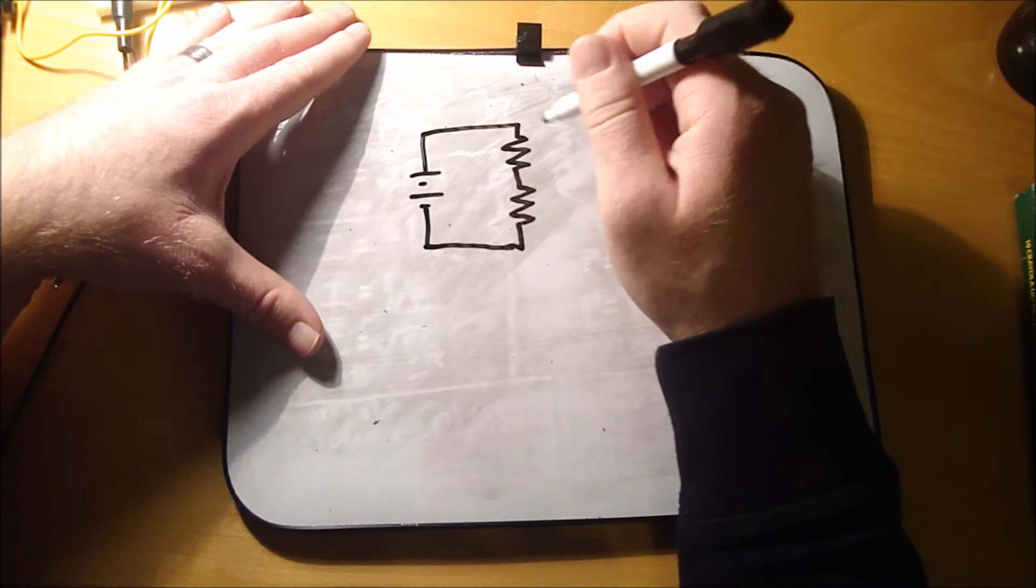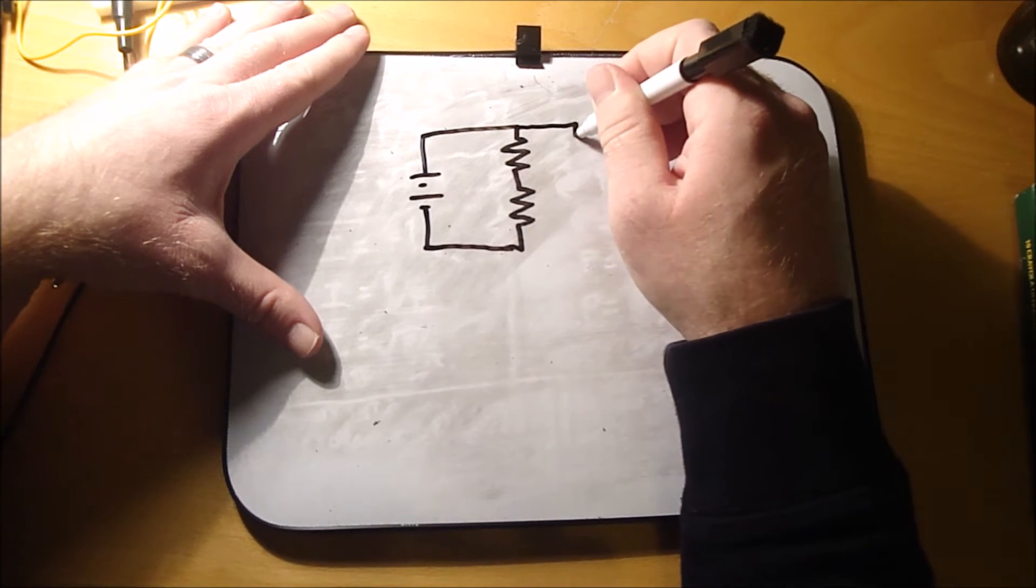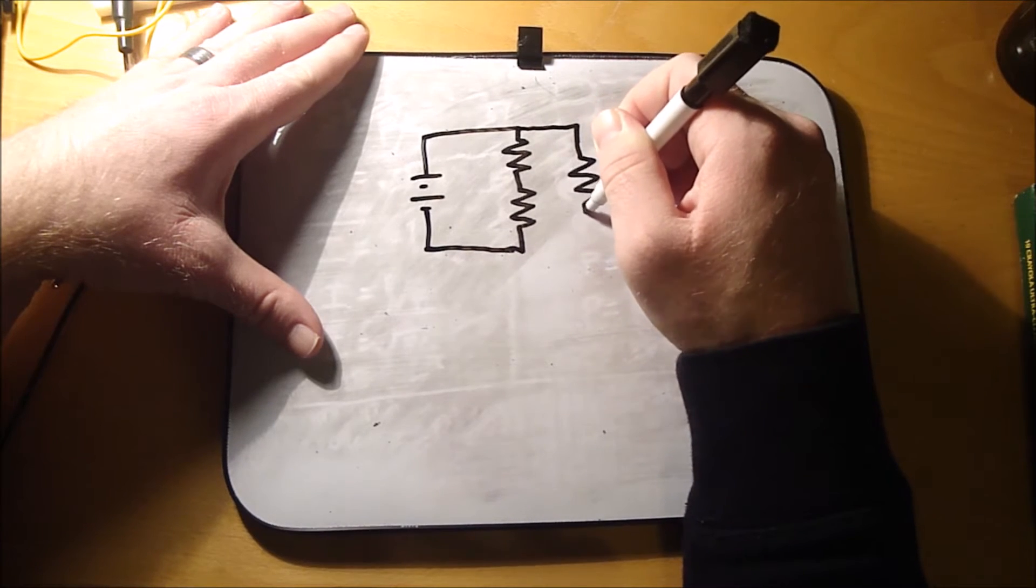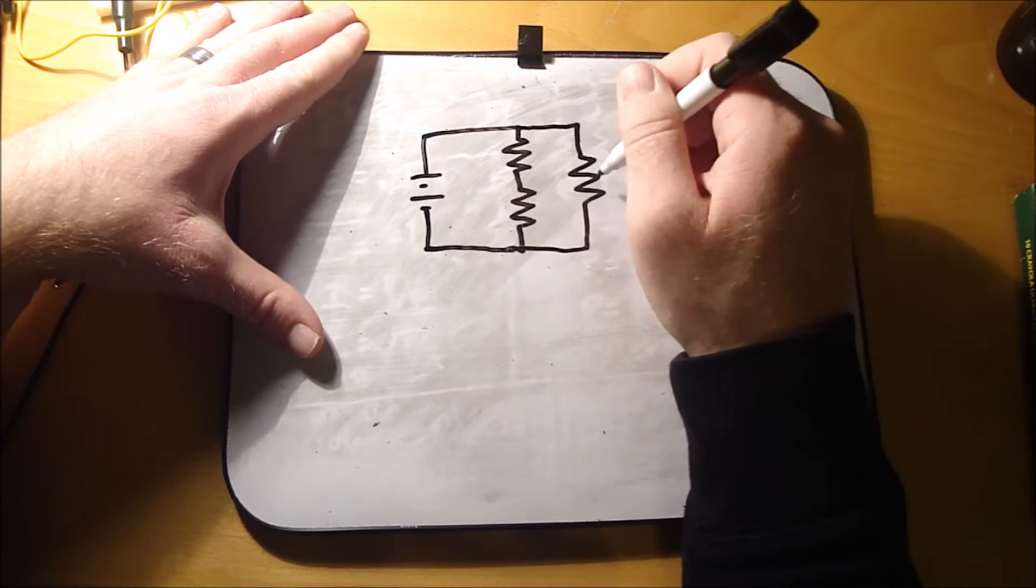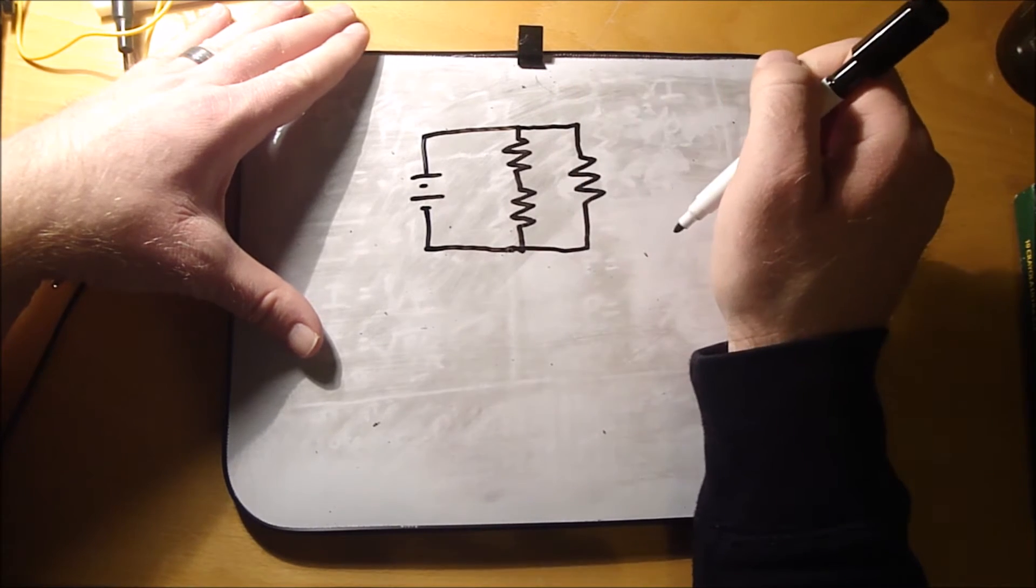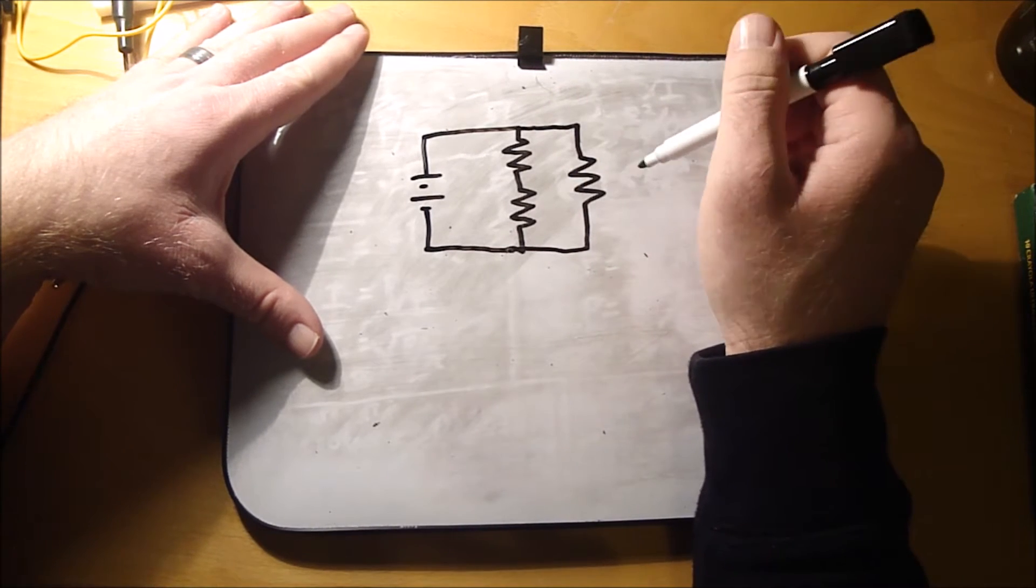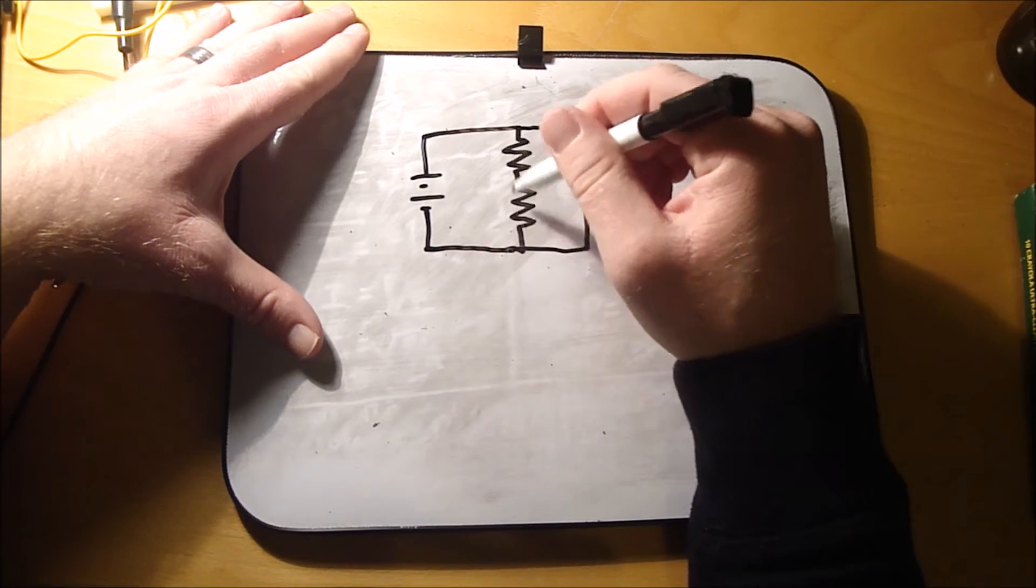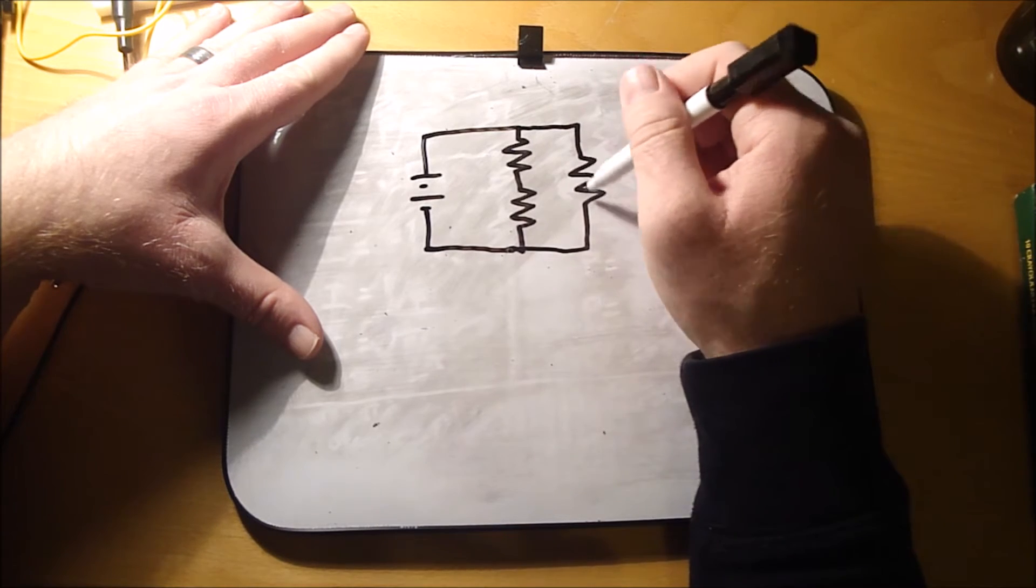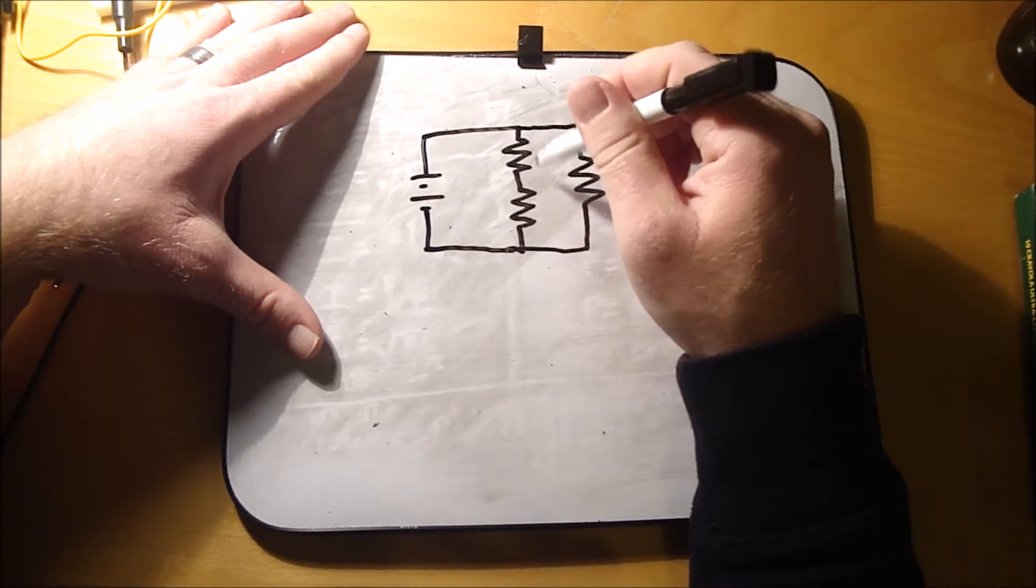Now a parallel circuit would be something that is exactly what it says. This resistor here is in parallel with these two resistors. That's a parallel circuit. So we got these two resistors in series with each other, and then this resistor in parallel with these two resistors.